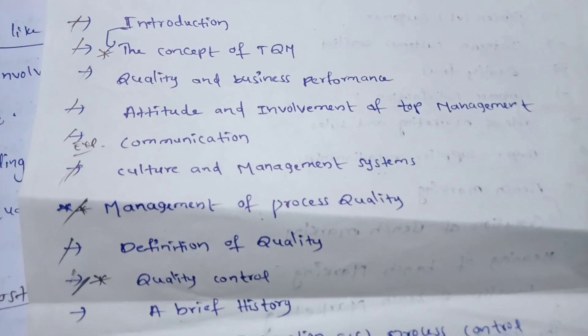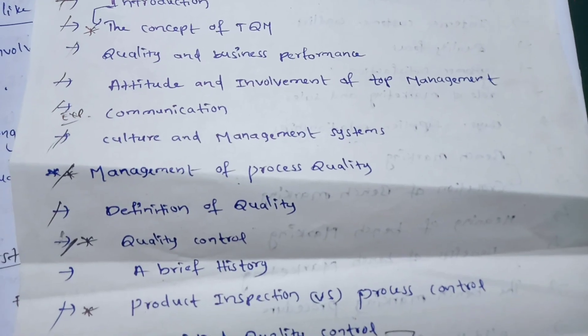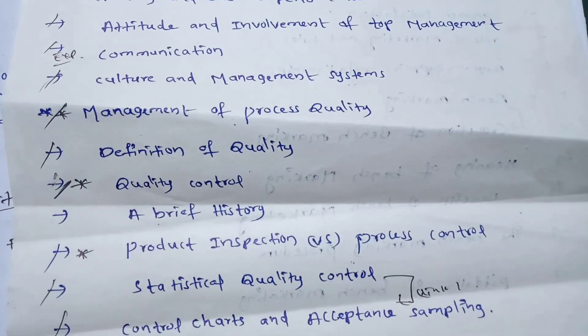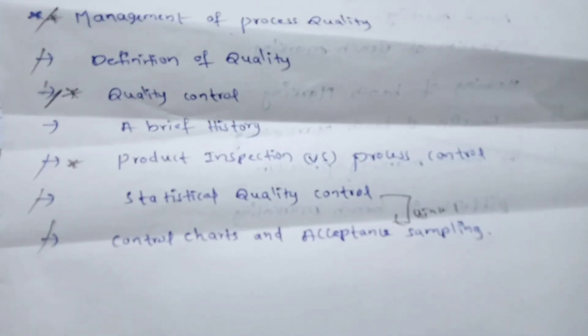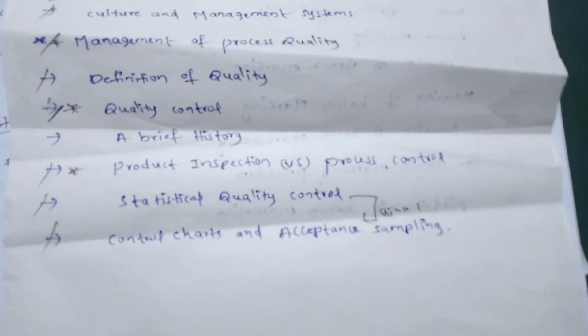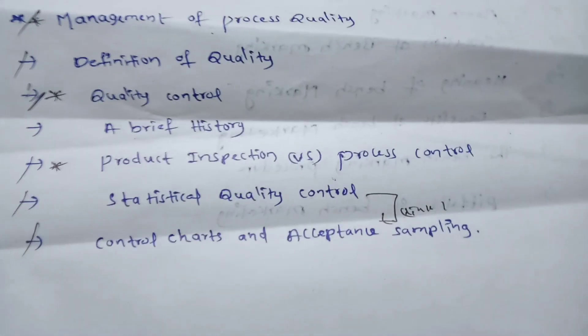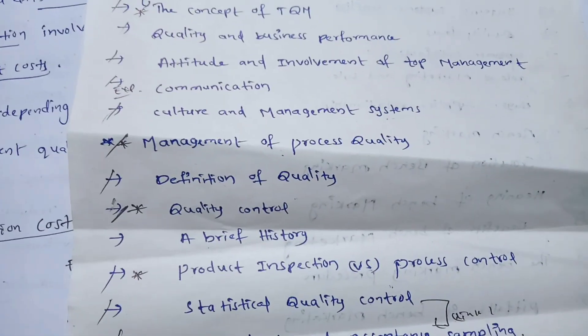Unit one topics include: business performance, attitude and involvement of top management, communication, culture, management systems, management of process quality, definition of quality, quality control, a brief history, product inspection, process control, statistical quality control, control charts, and acceptance sampling.